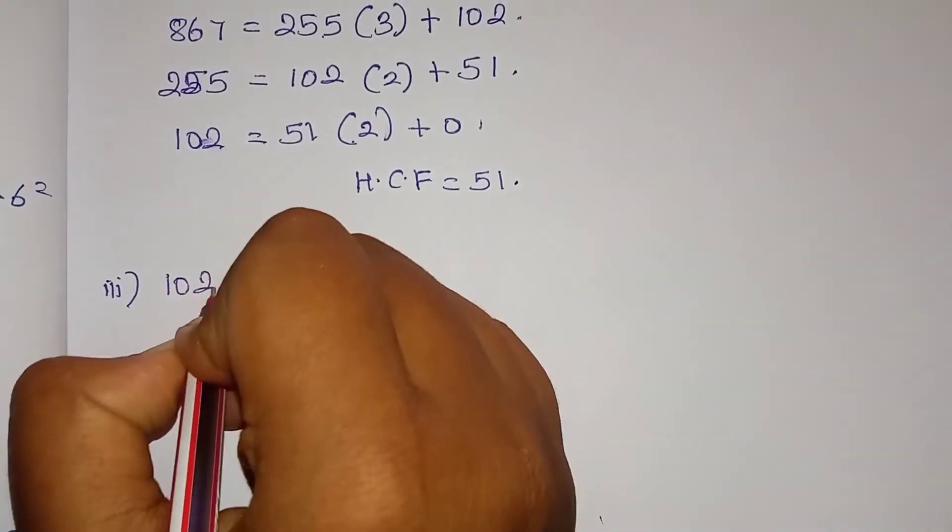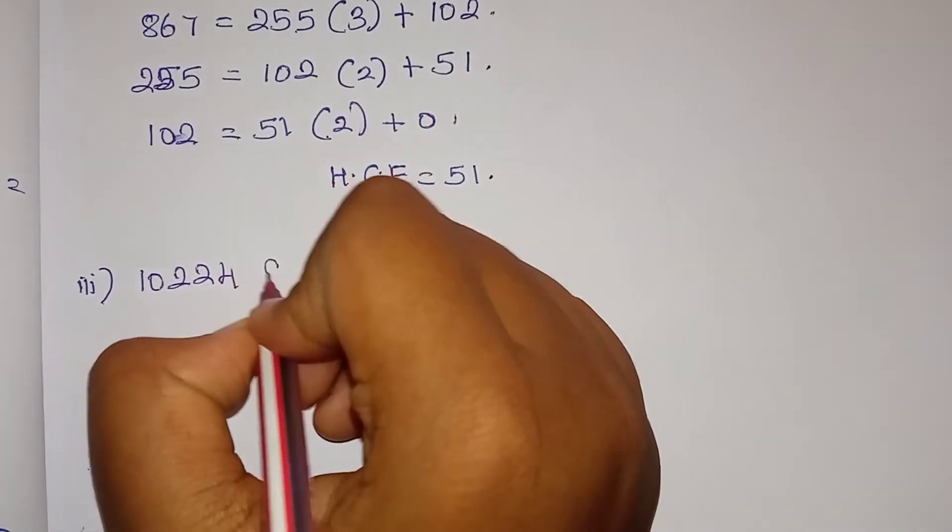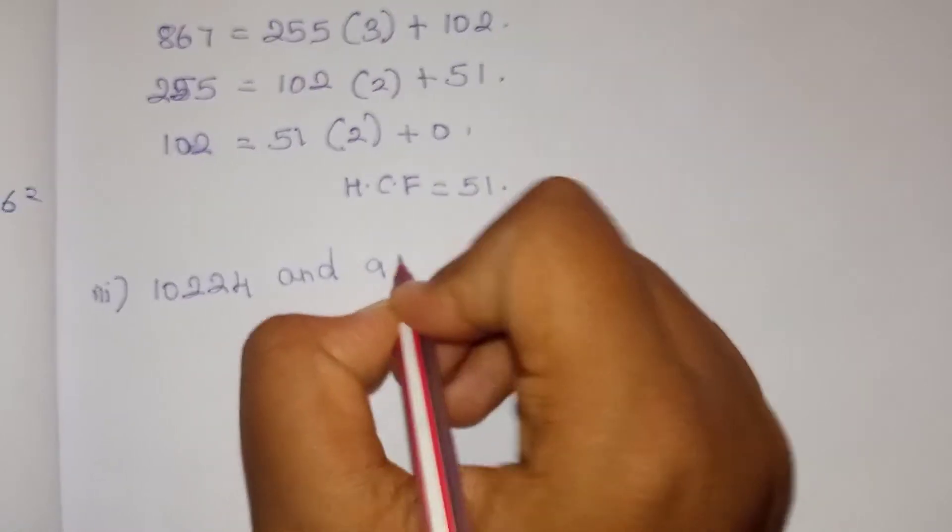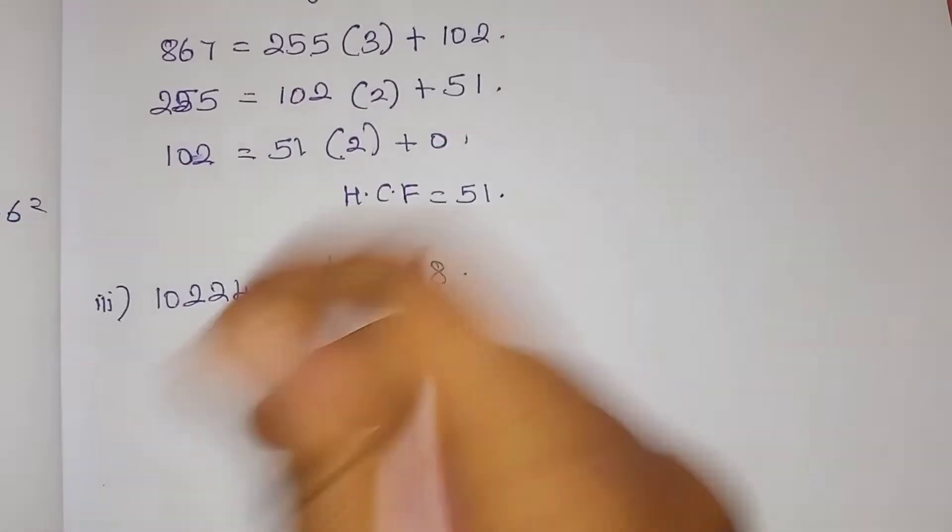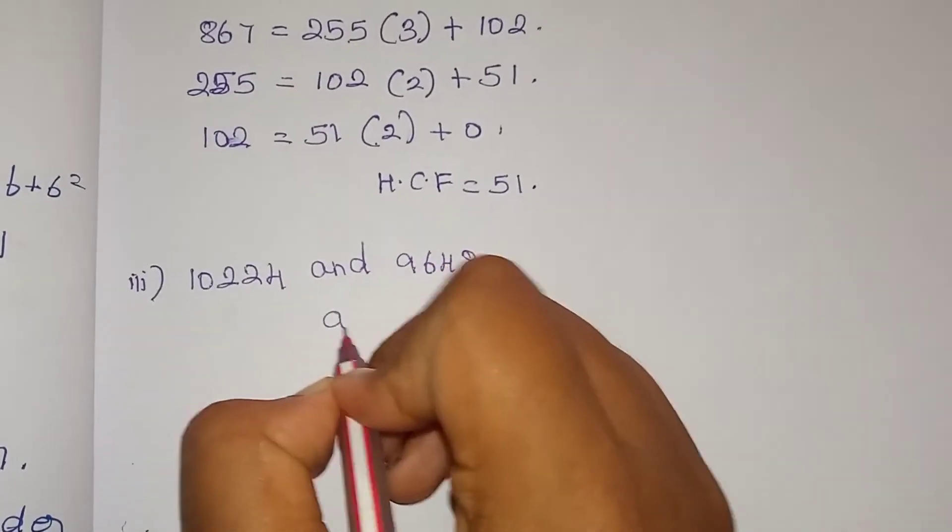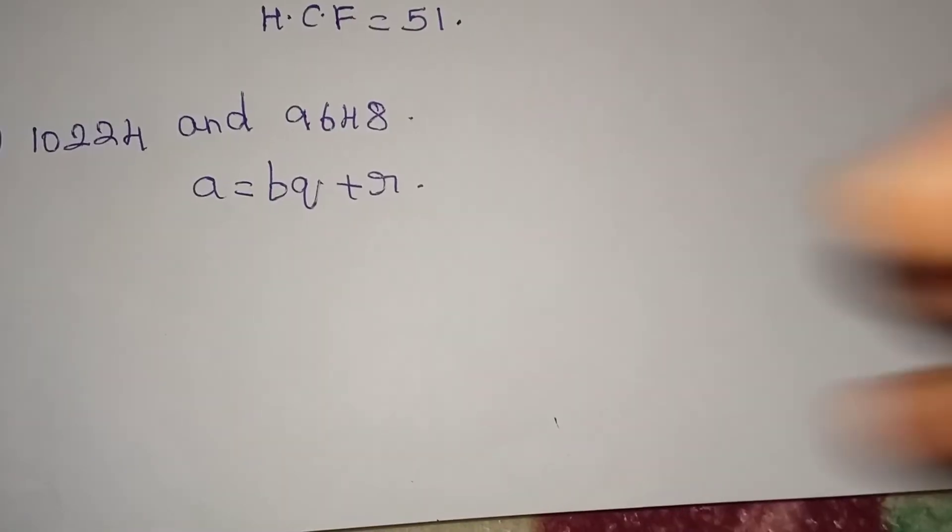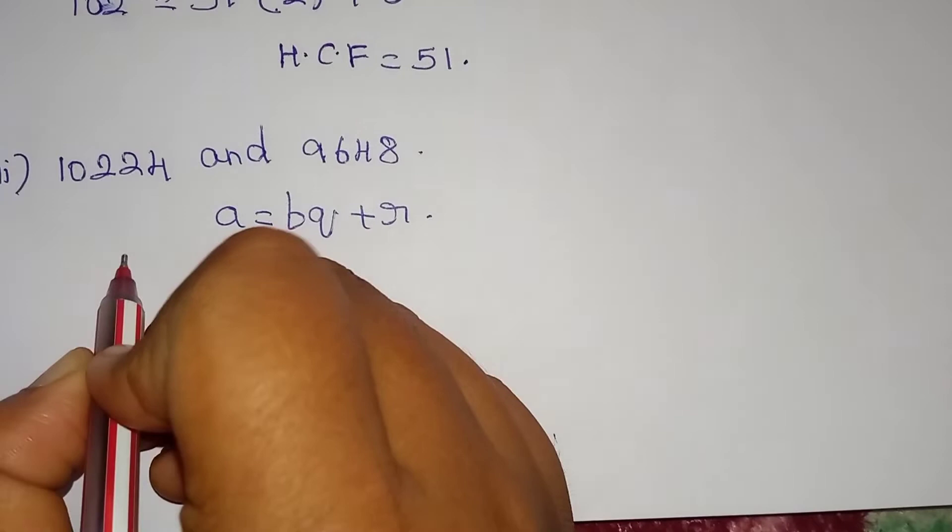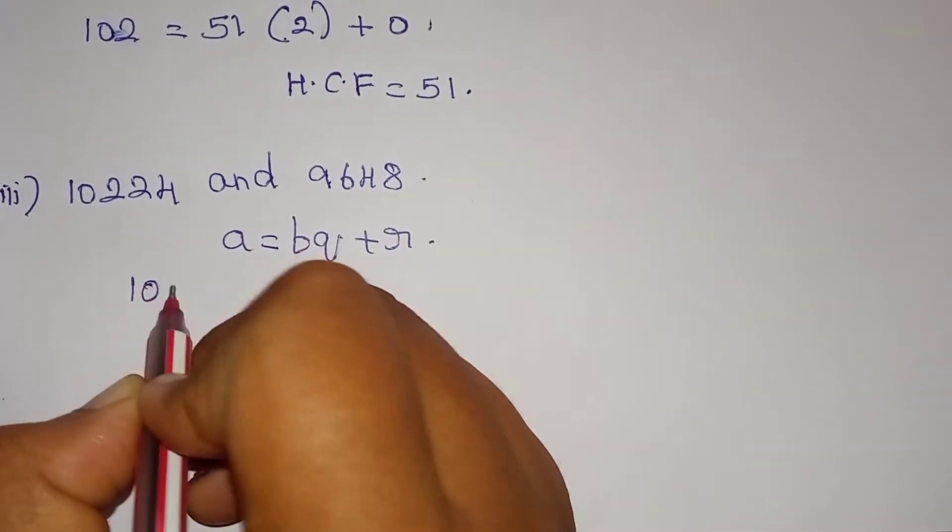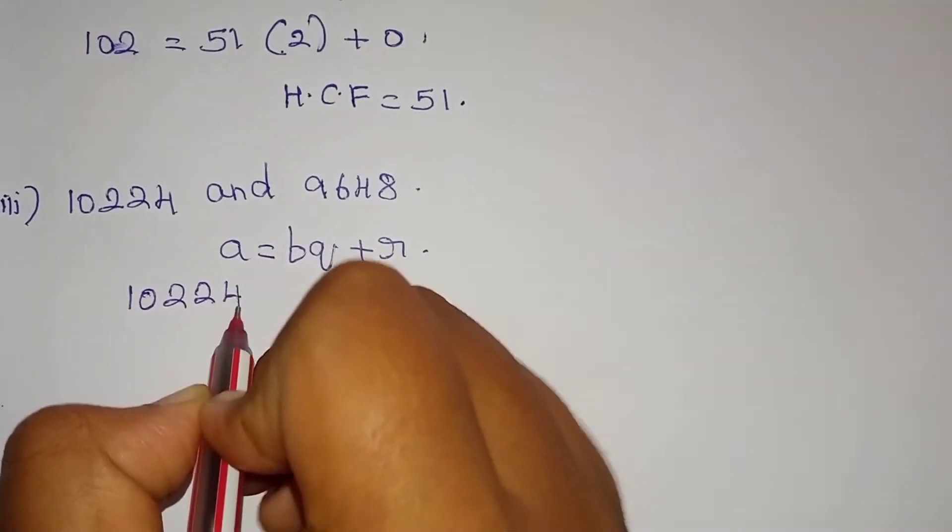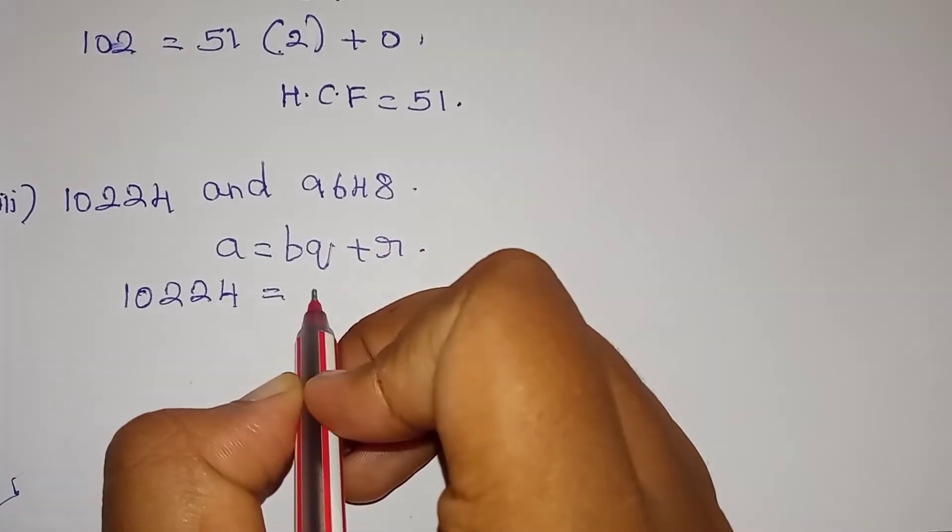Third separation: 10224 and 9648. A is equal to b cubed plus r. A is 10224, b is 9648.